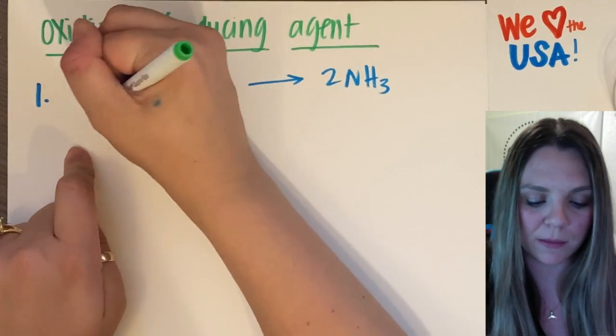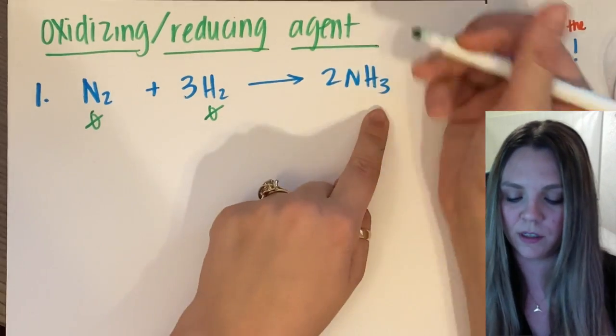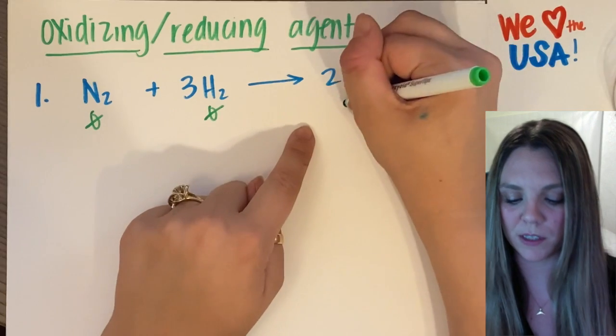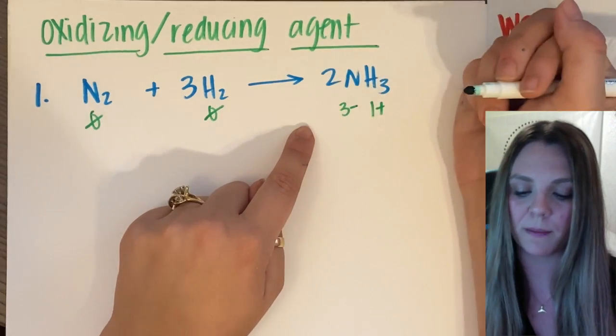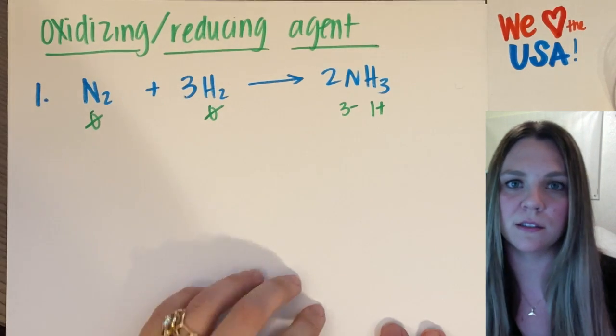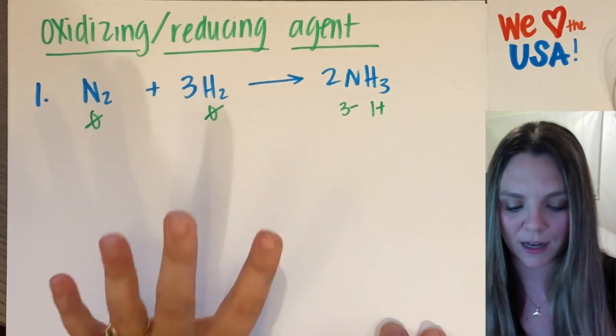Nitrogen in its elemental state is zero. Hydrogen in its elemental state, zero. Hydrogen gets a one plus, there's three of them, so that means this nitrogen is a three minus. If you need to see that written out, go practice how to do your oxidation numbers, how to assign them.